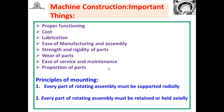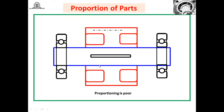Before mounting, there are two basic principles of mounting that are very important. Principle one: every part of a rotating assembly must be supported radially — whatever part we mount on the shaft, we must ensure the rotating assembly is supported radially. Principle two: every part of a rotating assembly must be retained or held axially — proper retainment along the axial direction. These two principles must be taken into account while mounting bearings and machine components.